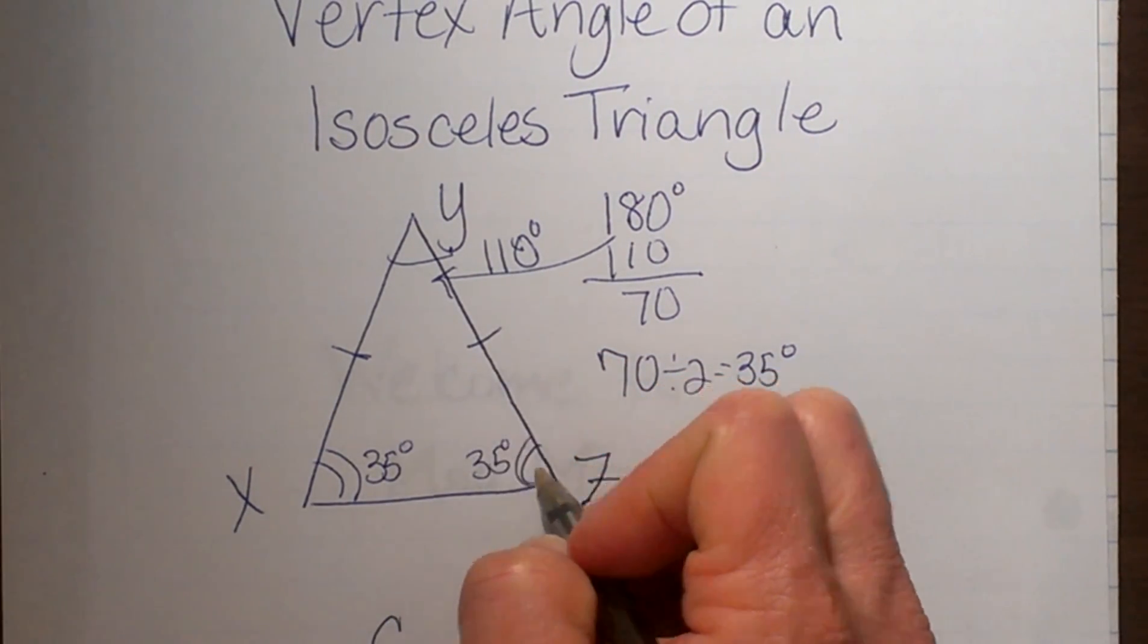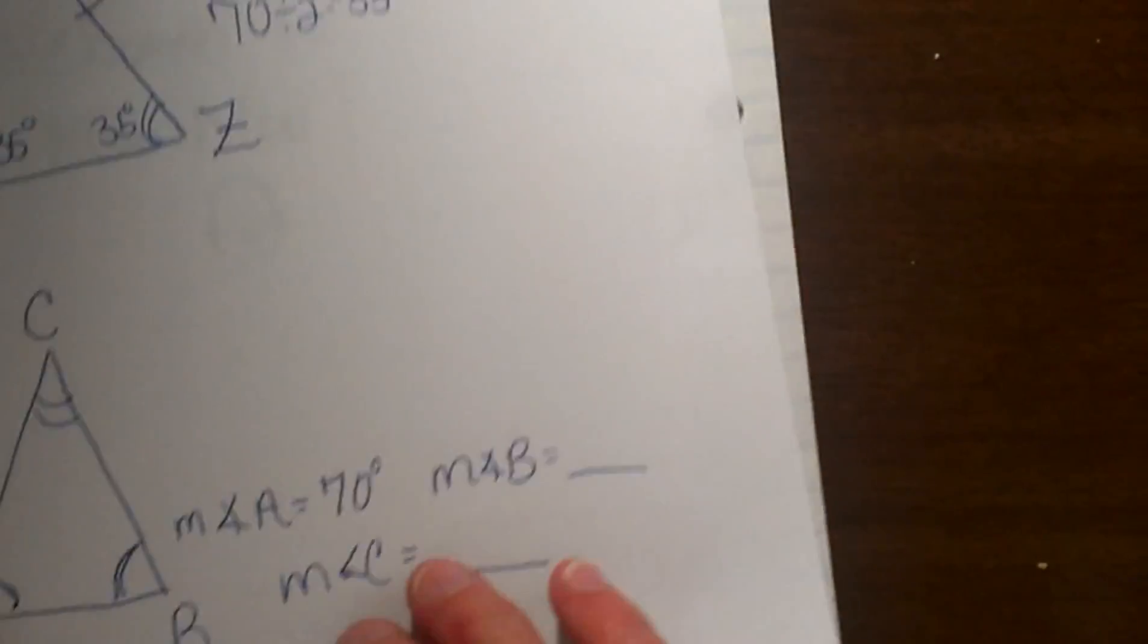And that is how you would work an isosceles triangle and work those three angles. So let's look at it in reverse.